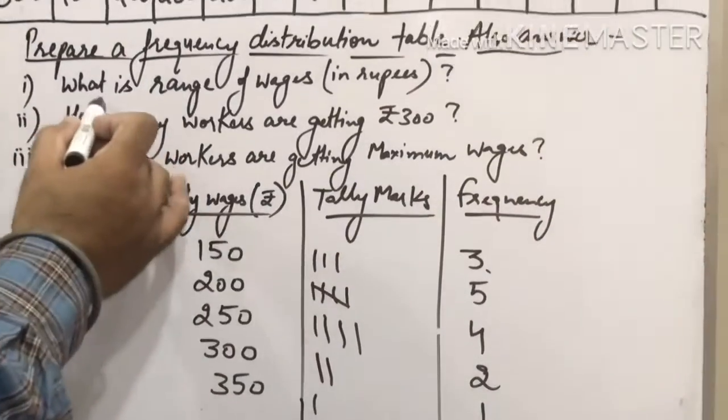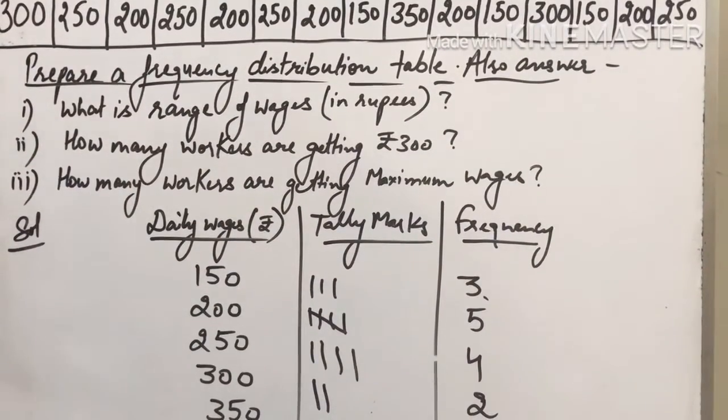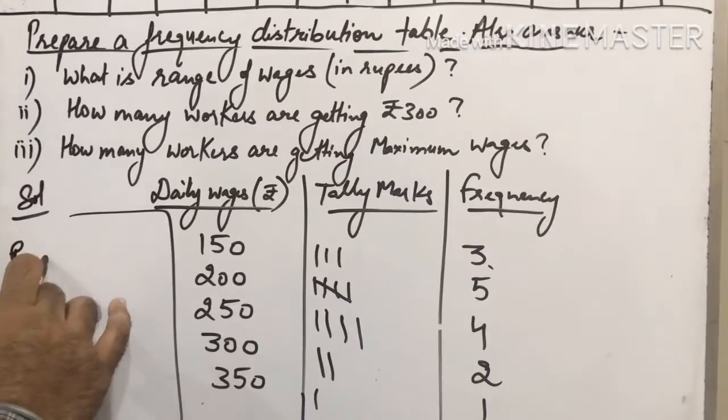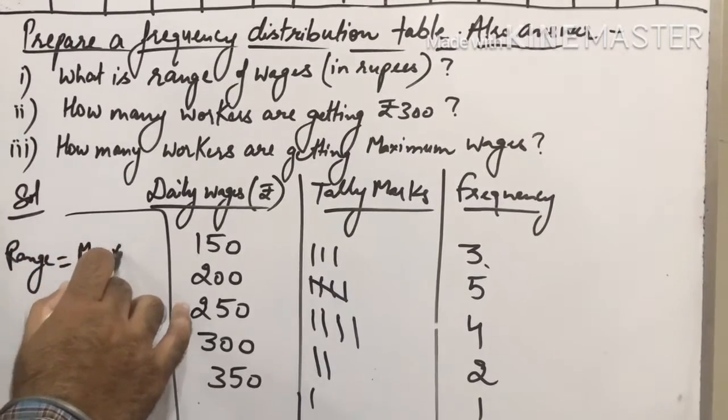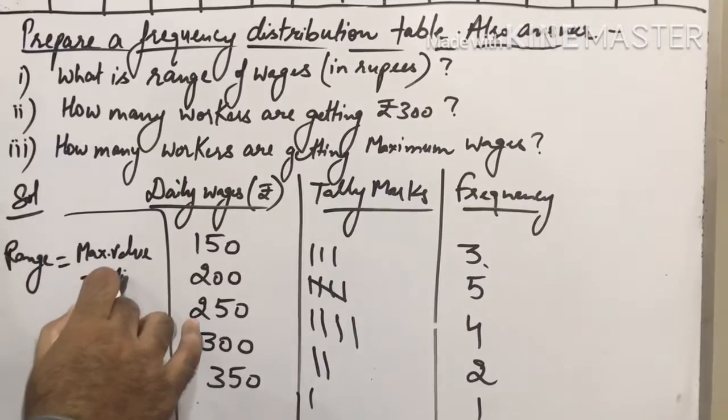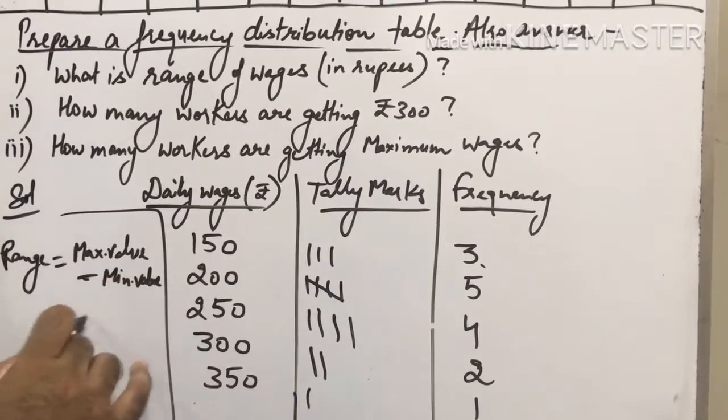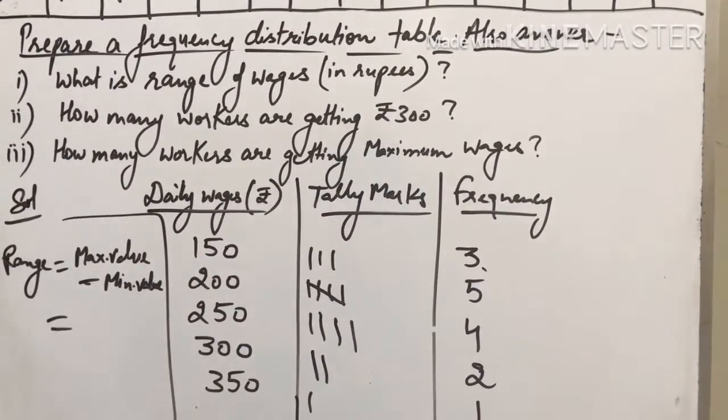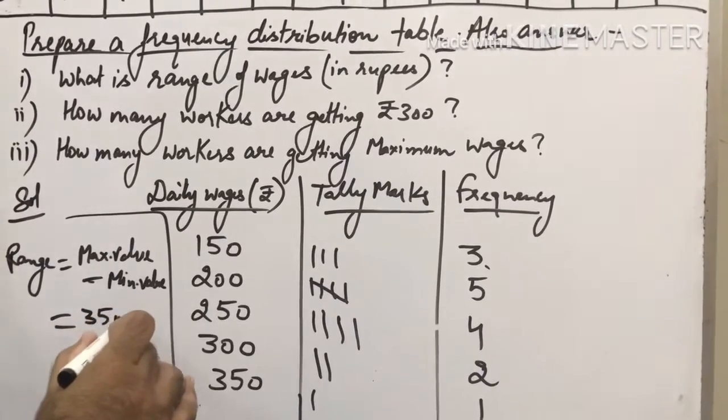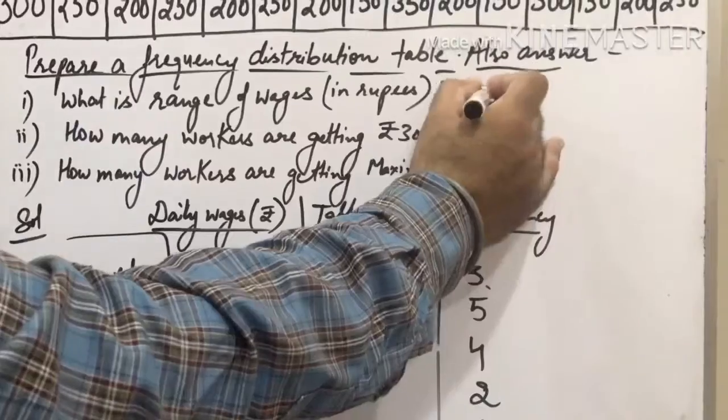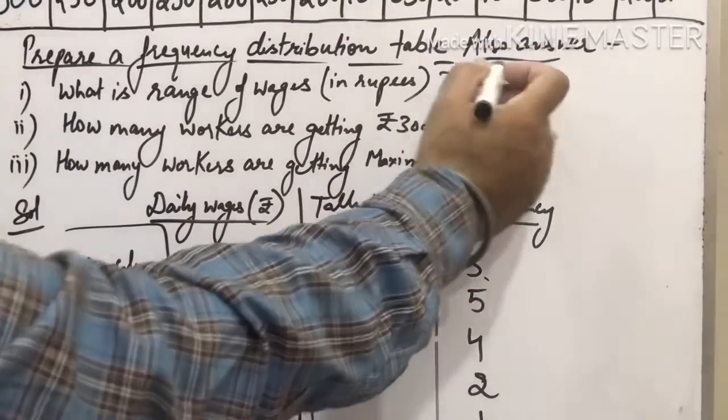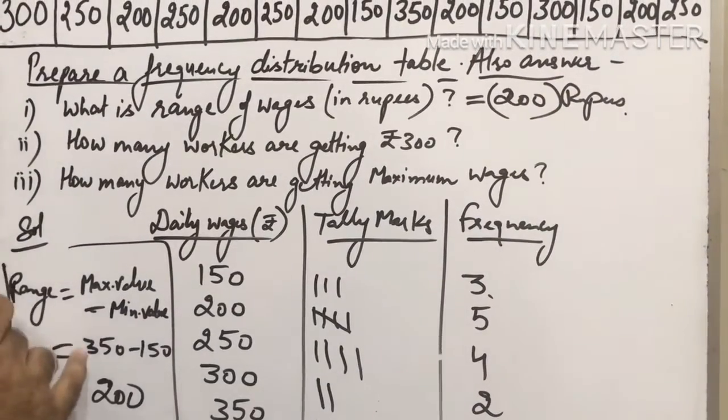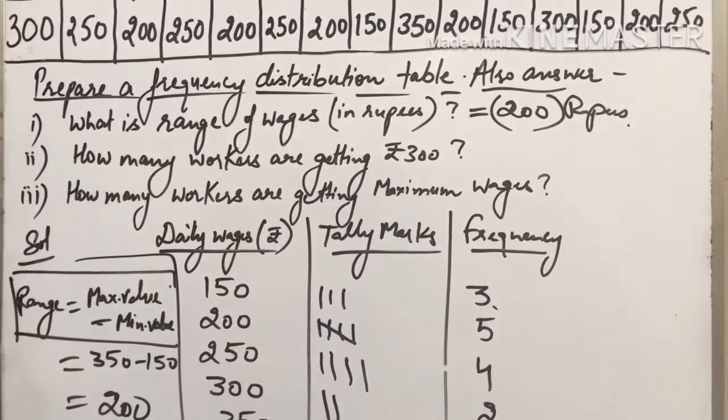Now the question asks: What is the range of wages in rupees? The range formula—I told you in the introduction—range is maximum value minus minimum value. In this case, maximum wages is how much? The biggest value is 350, and minimum is 150. Subtract minimum from maximum, so what will the range be? It comes to 200 rupees. It was asked in rupees, so the range is 200 rupees.